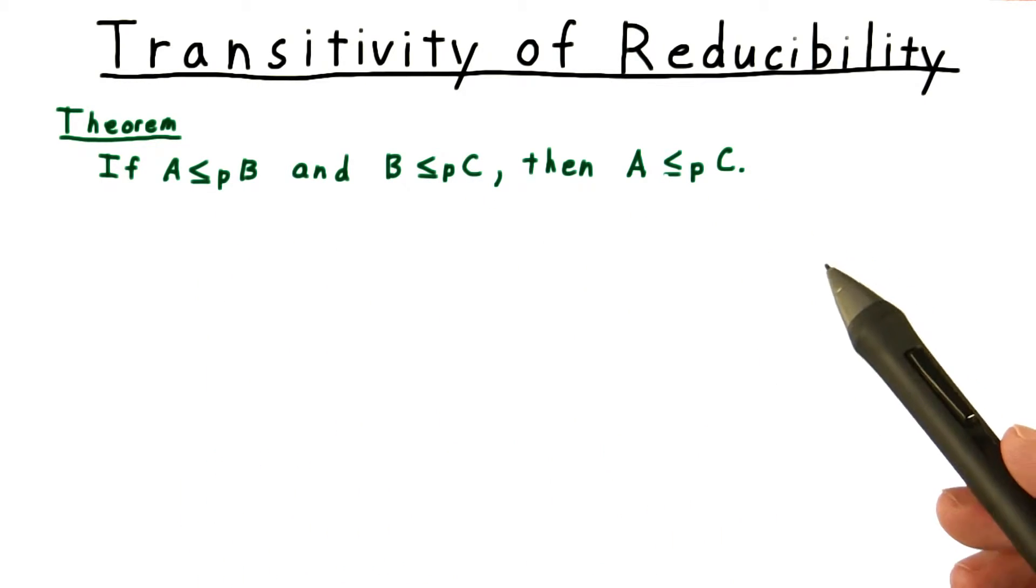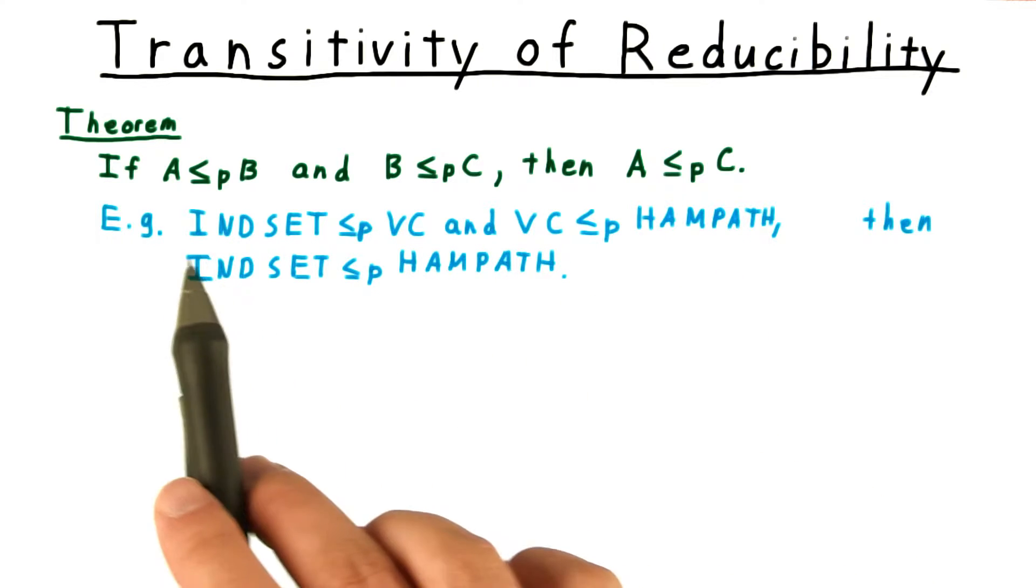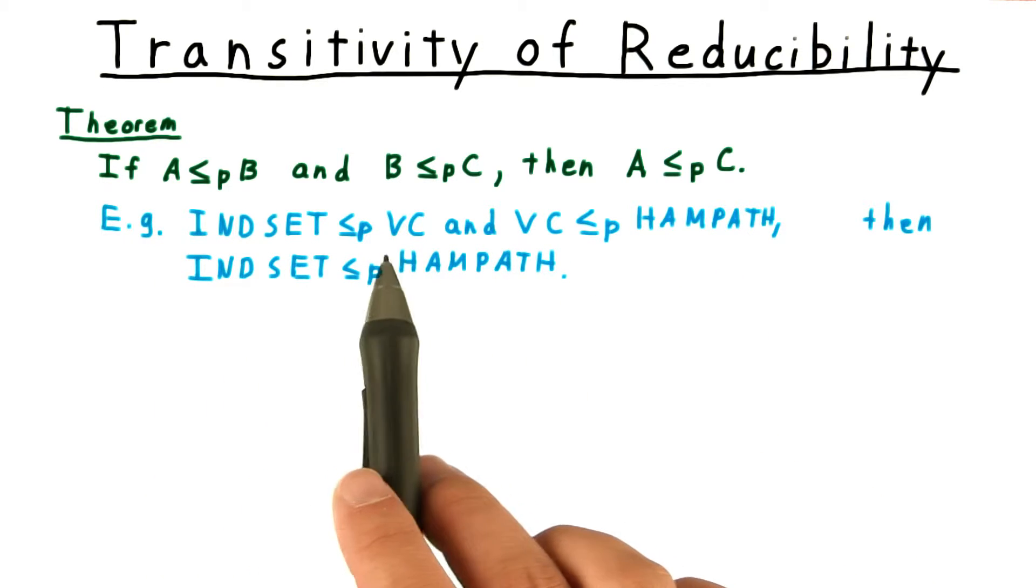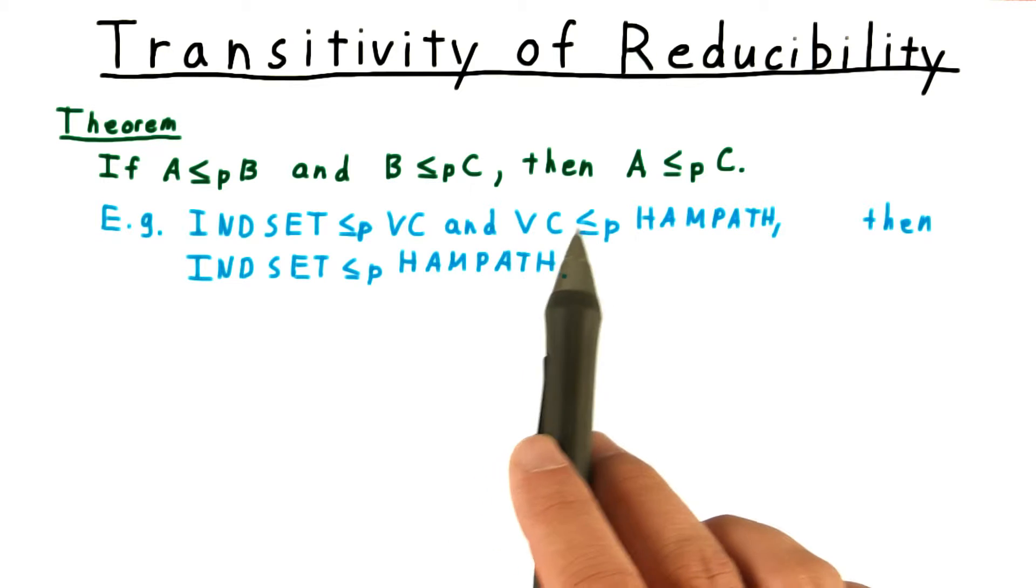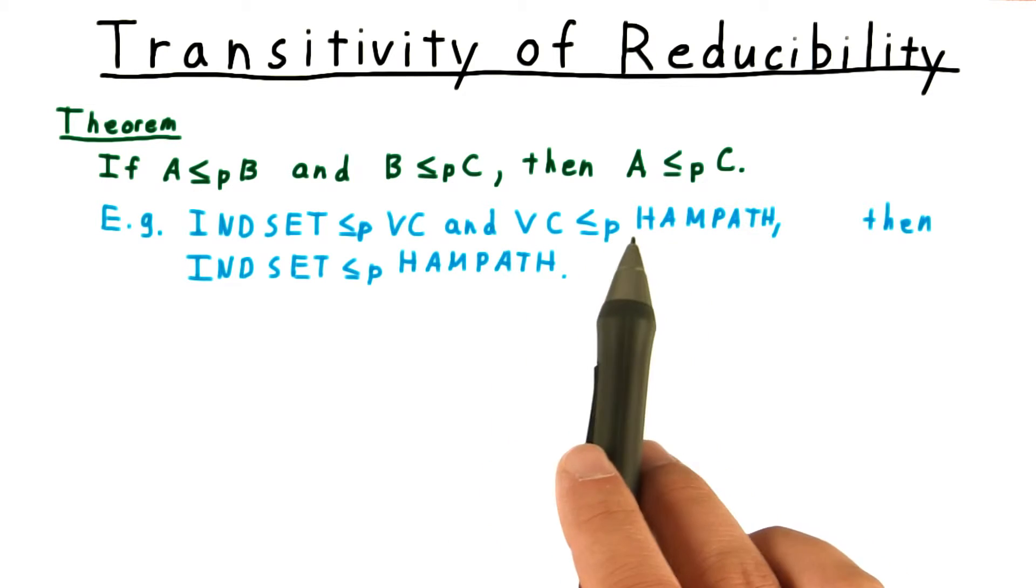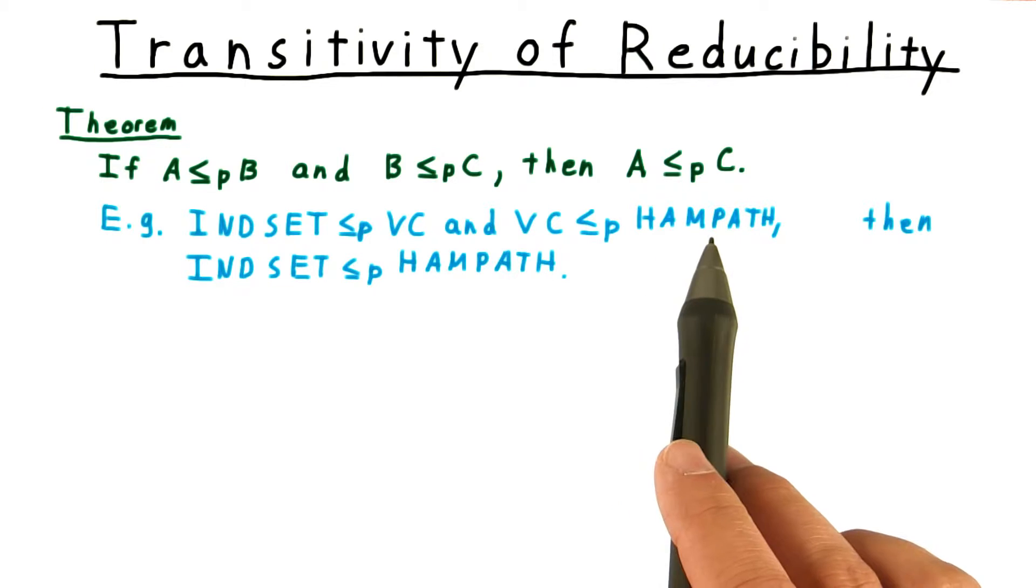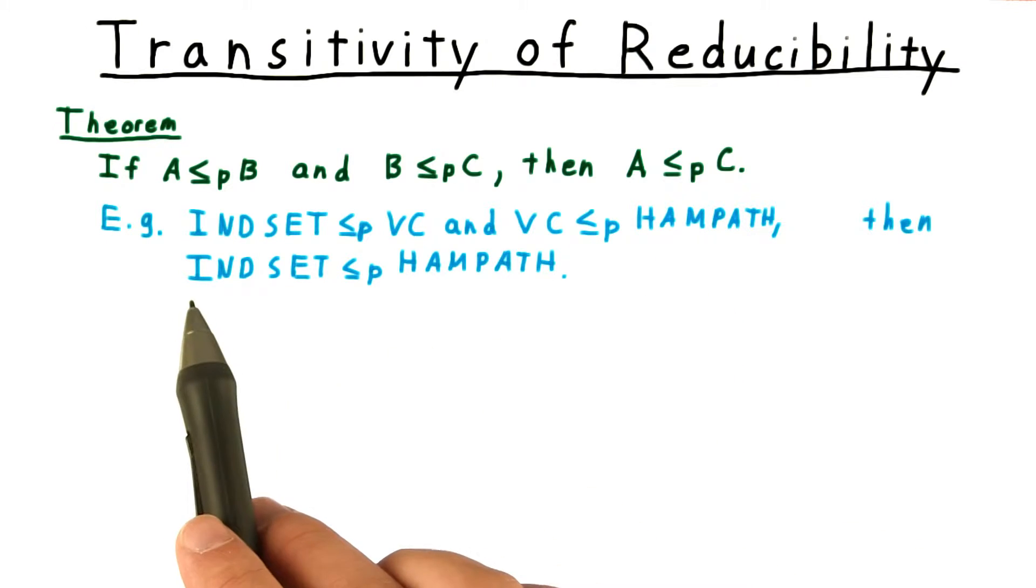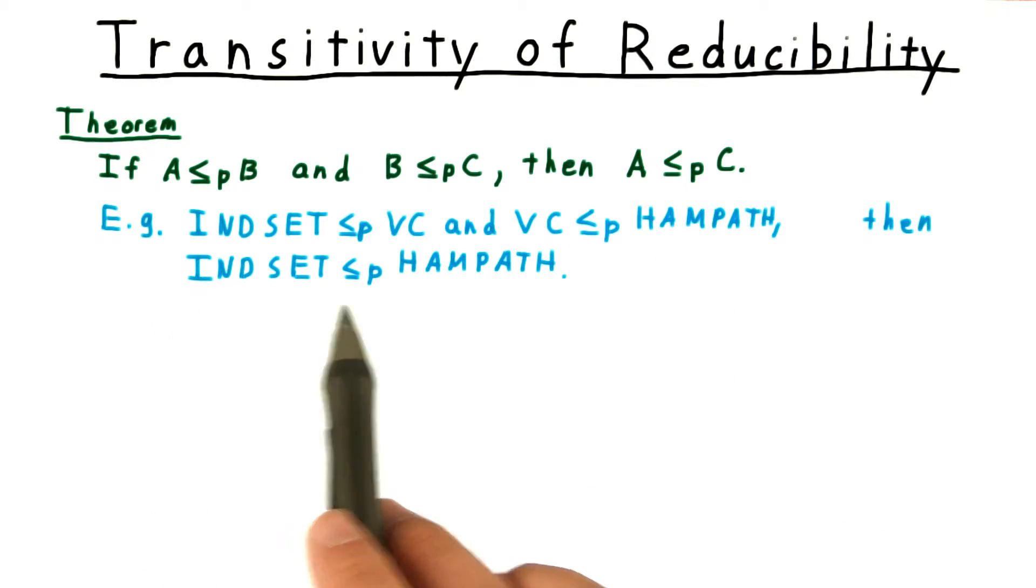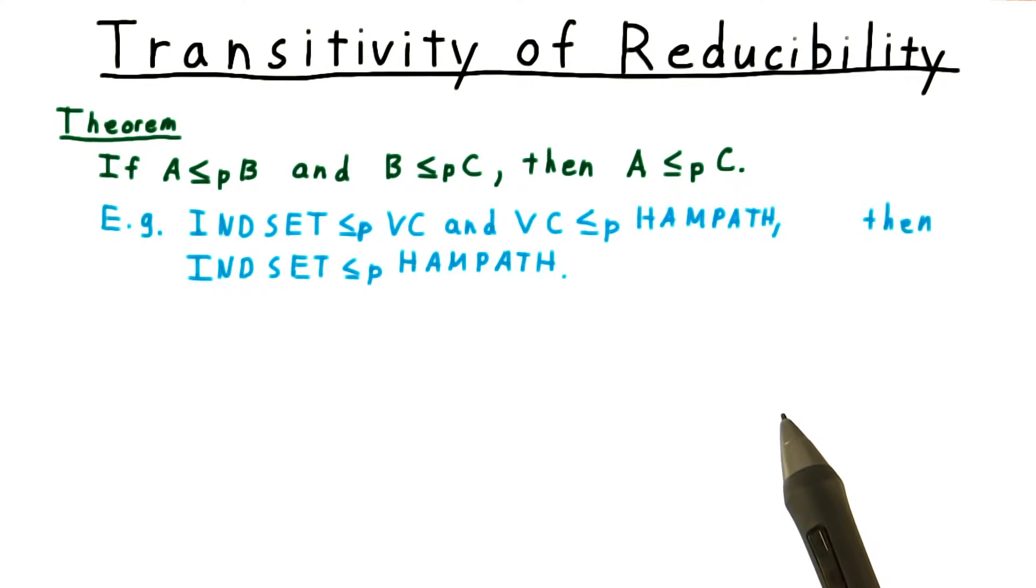For example, we've seen how independent set is reducible to vertex cover. And I claim that vertex cover is reducible to Hamiltonian path, a problem closely related to the traveling salesman problem. And from these facts, it follows that independent set is reducible to Hamiltonian path.